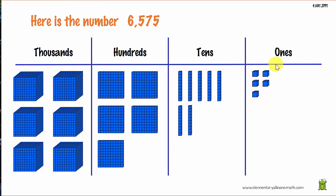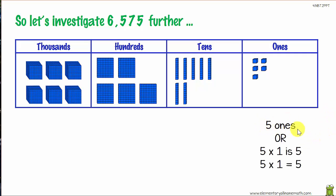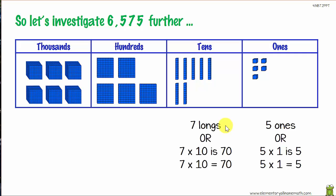Here's the number again: six thousand, five hundred and seventy-five. We can now see that there are five ones, seven tens, five hundreds, and six thousands. In our base 10, let's expand further. In our ones column we have five ones, or five times one, which equals five. In our tens we have seven longs, or seven times ten, which is 70.